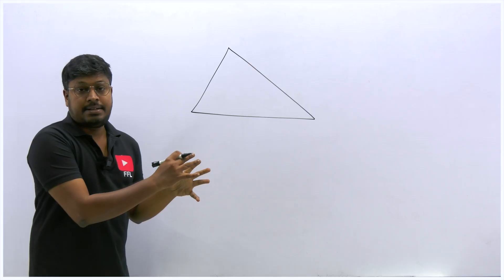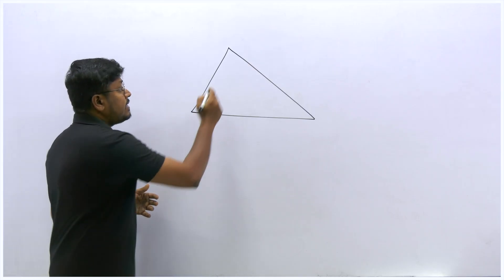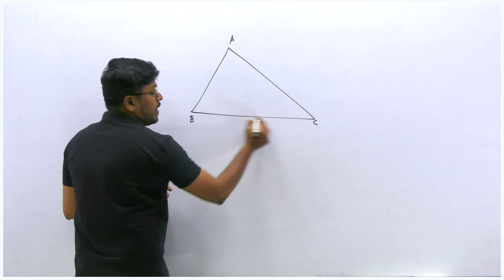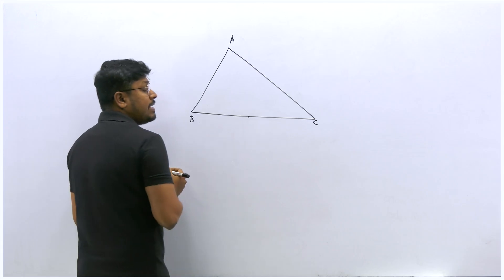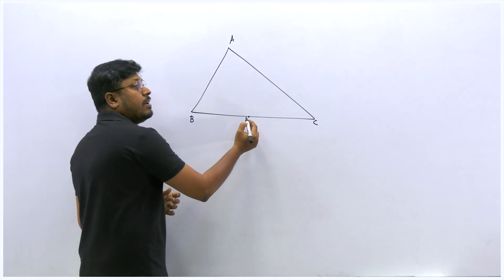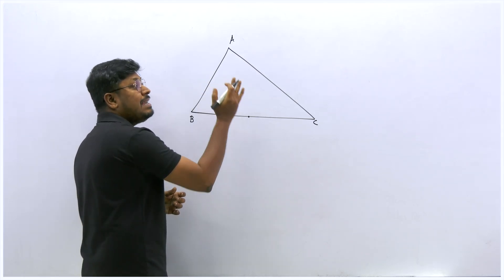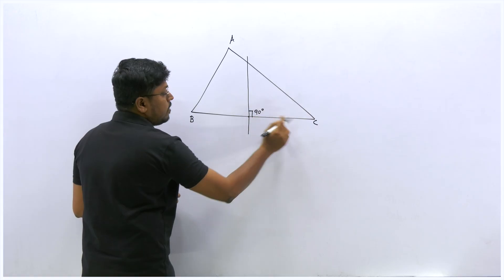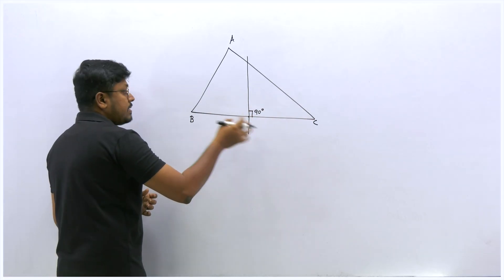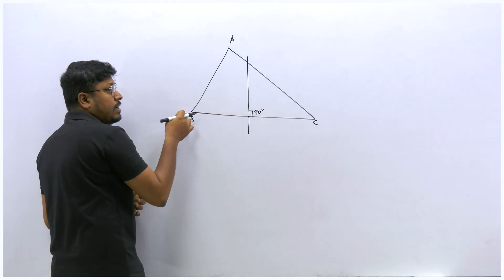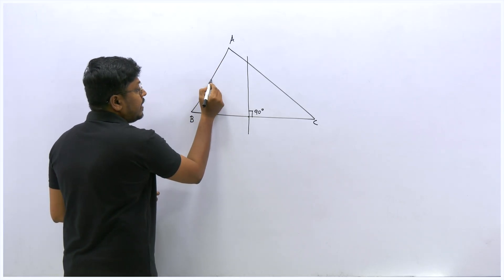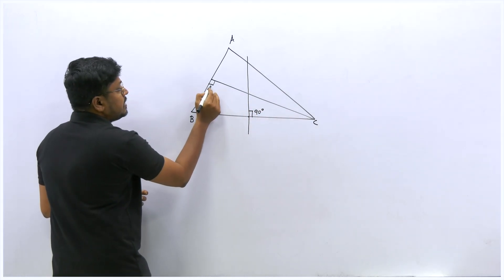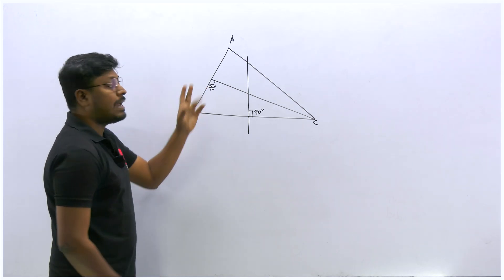If it is a circumcenter, you must draw a perpendicular bisector. Take triangle A, B, and C. Find the midpoint of BC and draw a perpendicular line—that is, a line at 90 degrees. Similarly, find the midpoint of AB and draw a perpendicular line there at 90 degrees. That gives us two perpendicular bisectors.